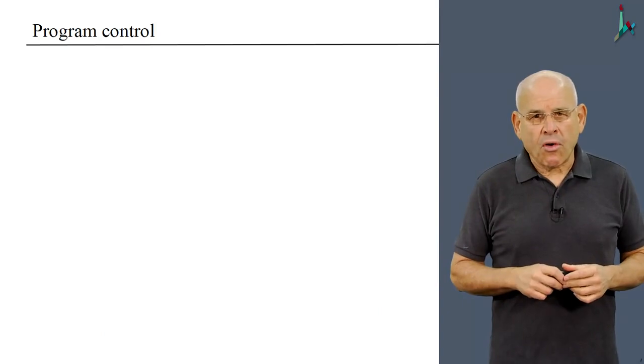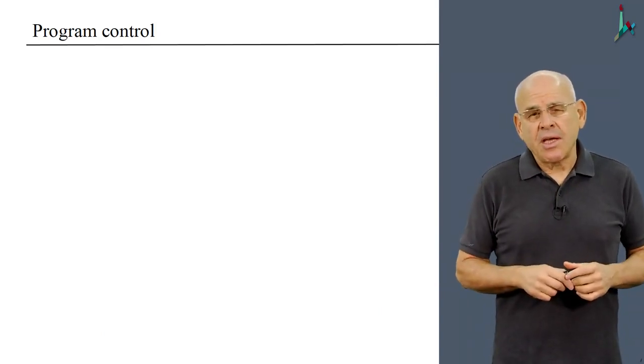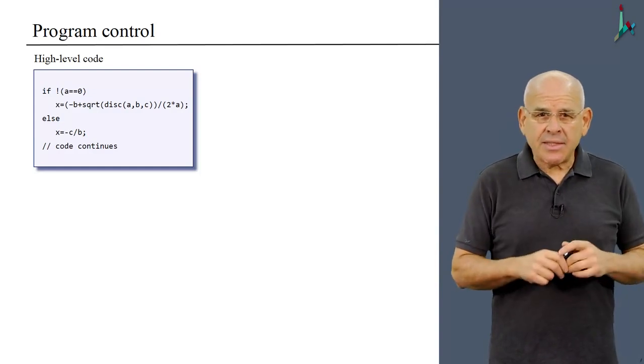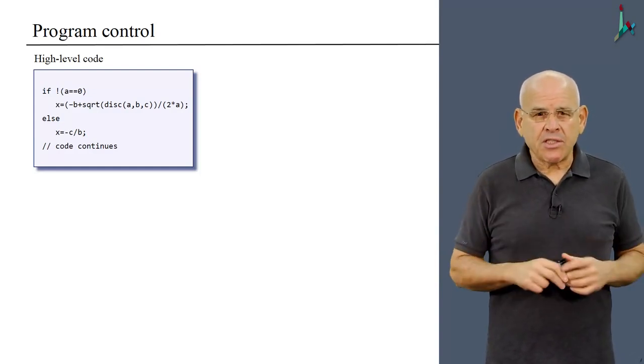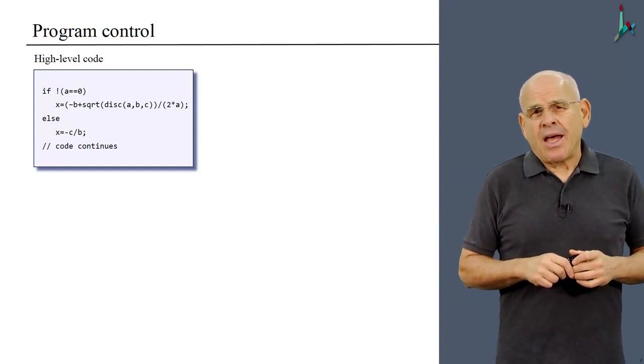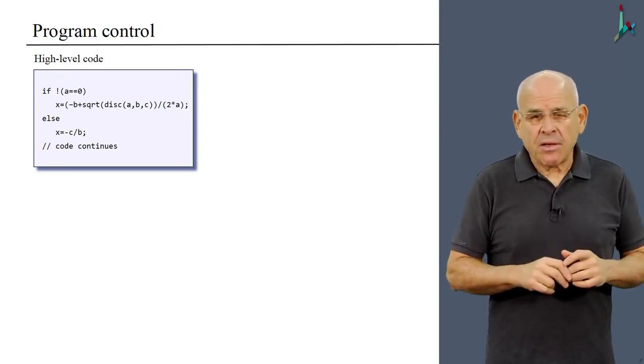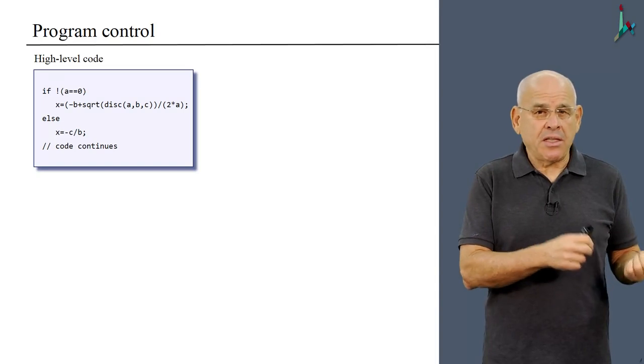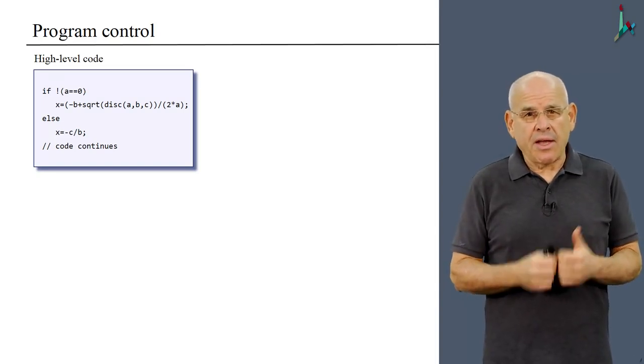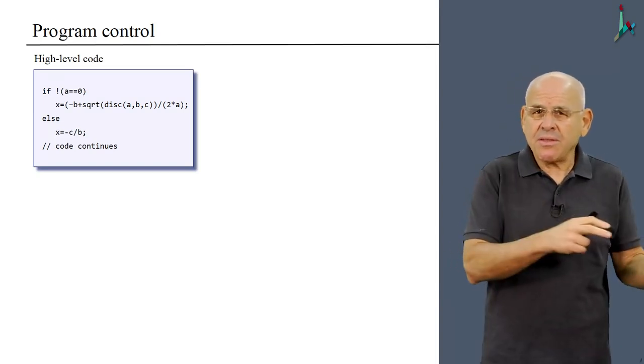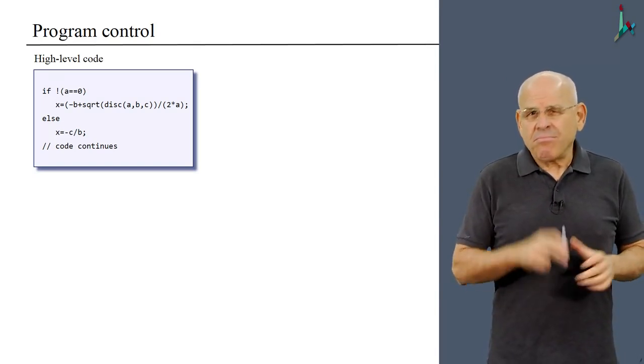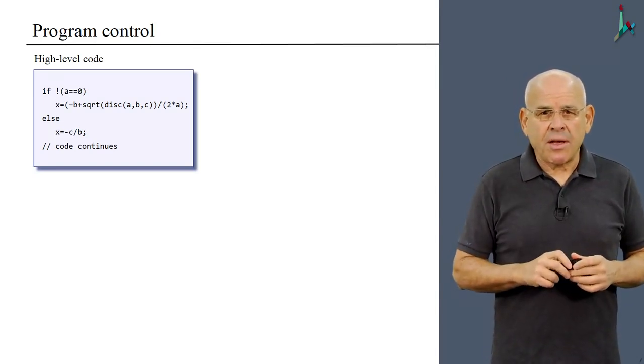Another aspect of program control, in addition to functions, is the notion of branching. And using this example of computing the so-called discriminant, because of some mathematical reasons, it makes sense to first check if a is not equal zero and only then compute this computation. Otherwise, do something else.